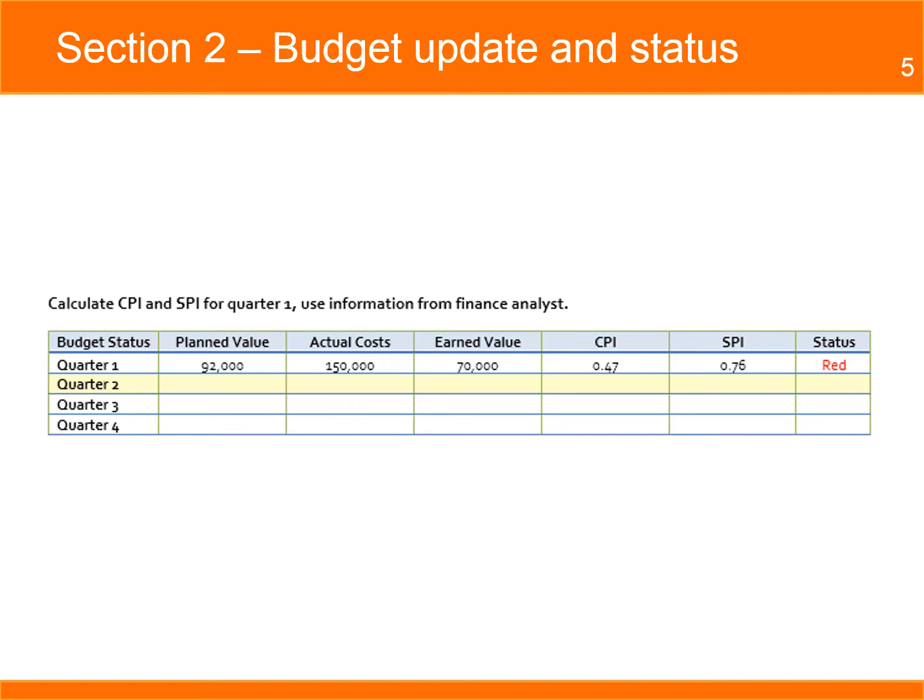When both CPI and SPI are below 1, the status is red. Budget data will be provided every week to help you calculate the index values.